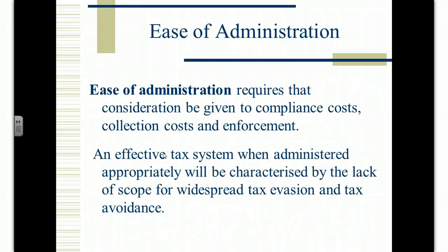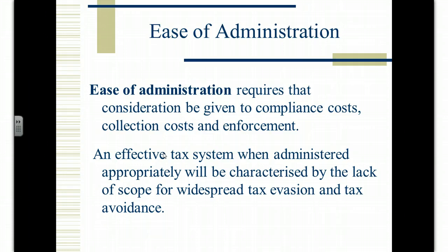The third of Smith's canons of taxation is certainty or ease of administration — it simply means the tax must be easy to collect. There's no point having a tax where most of the revenue is consumed in collecting it. Ease of administration requires consideration of compliance costs, collection costs, and enforcement. How much does it cost those on whom the tax is imposed to comply? How much does it cost the revenue administration to collect? And if people are evading or avoiding the tax, what levels of enforcement are required? If these are excessive, it simply isn't worth collecting the tax.